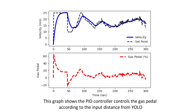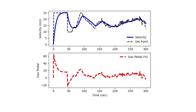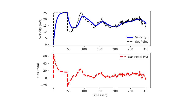This graph shows the PID controller controlling the gas pedal according to the input distance from YOLO. By default, the vehicle shall cruise at 25 meters per second. As the front vehicle draws near, the set speed shall decrease proportionally, and no gas pedal should be applied.